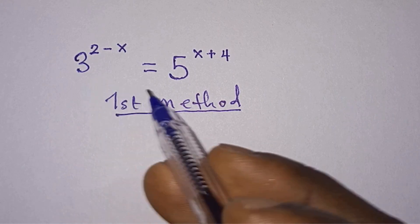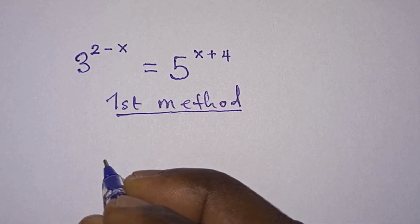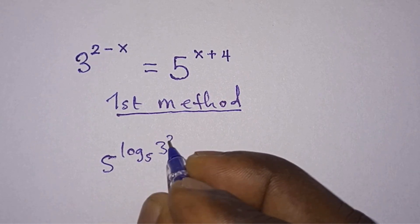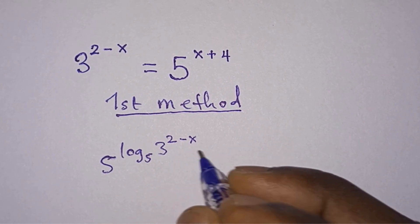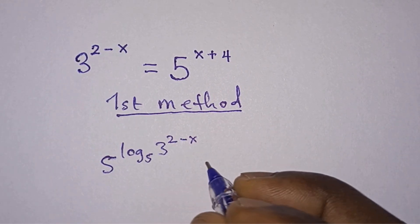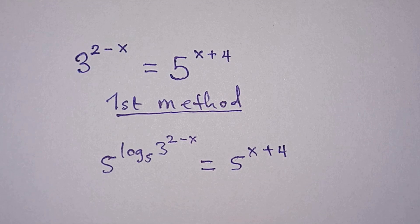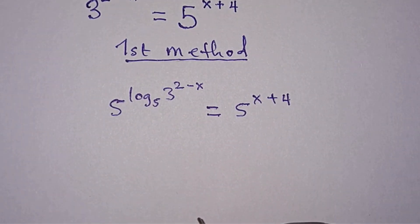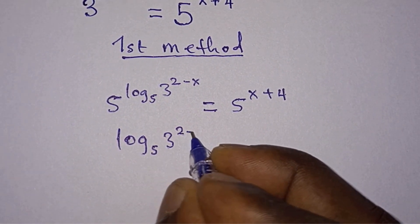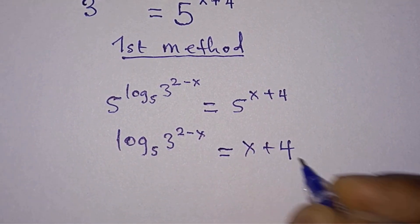With this method we'll make the bases on each side of the equation the same. Let's change 3 to base 5, and we can do that by writing 5 raised to the power log base 5 of 3, to the power 2 minus x, so that when the 5 and the log cancel we are left with what we have. And on the right hand side we have 5 to the power x plus 4. So now that the bases are the same, let's equate their exponents, so we have log base 5 of 3 to the power 2 minus x is equal to x plus 4.